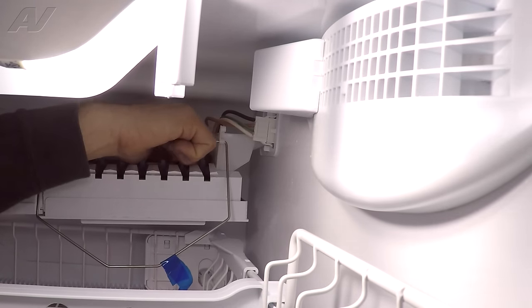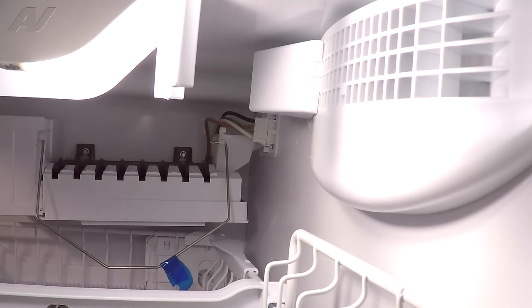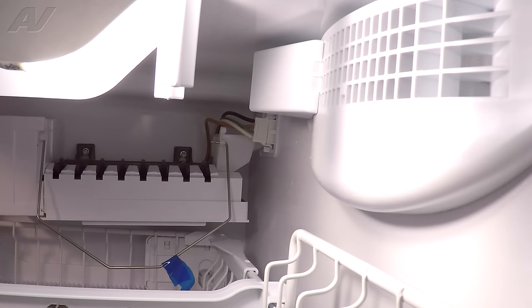So we're not getting any water to the ice maker, therefore it's not producing any ice. Next what we can do is manually cycle the ice maker and see if once it gets to the point where it calls for water, if we're getting any water or if we can hear our valve turning on to bring water to the refrigerator. To do that on this ice maker, we're going to need to remove this Phillips screw to remove the cover on the ice maker head there.